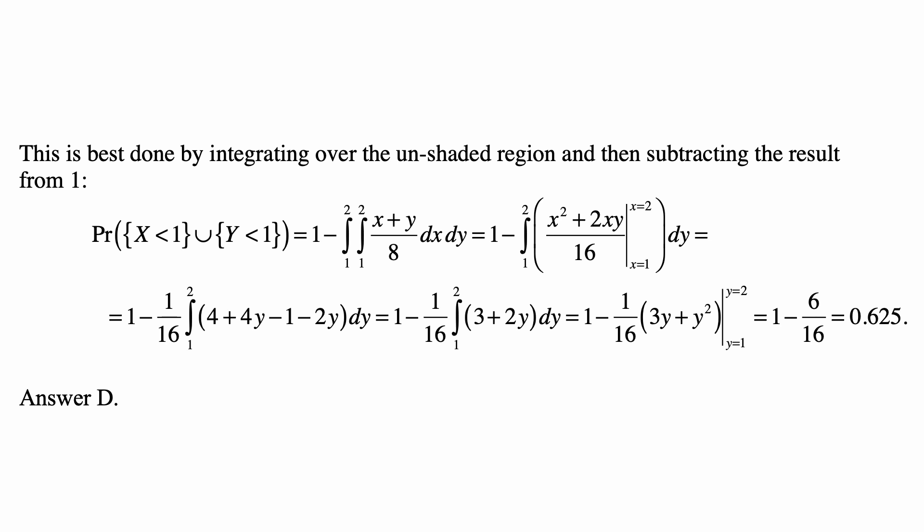We do the integral with respect to x first. We get (x²+2xy)/16 evaluated from x equal to 1 to x equal to 2. And then, of course, we take the integral from 1 to 2 of that with respect to y, and 1 minus that is the probability we want.